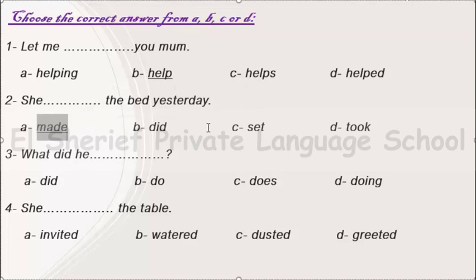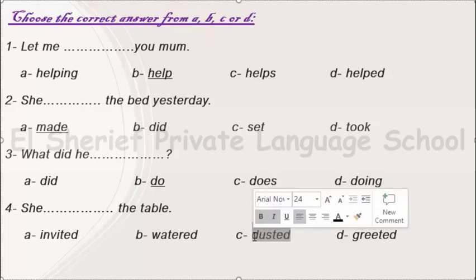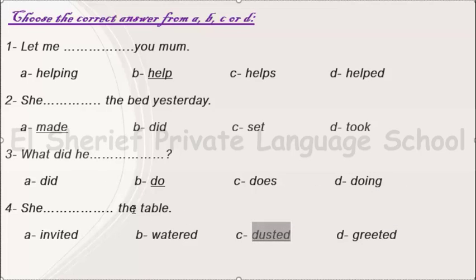Number 3: 'What did he do?' We have the helping verb did, so we put the verb in the infinitive form — we will choose do. Number 4: 'She dusted the table.' From the options invited, watered, dusted, or grated, we choose dusted, which means she cleaned the table.